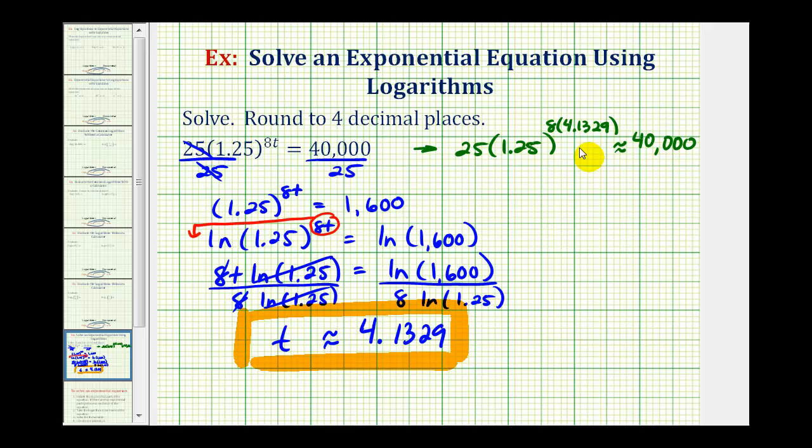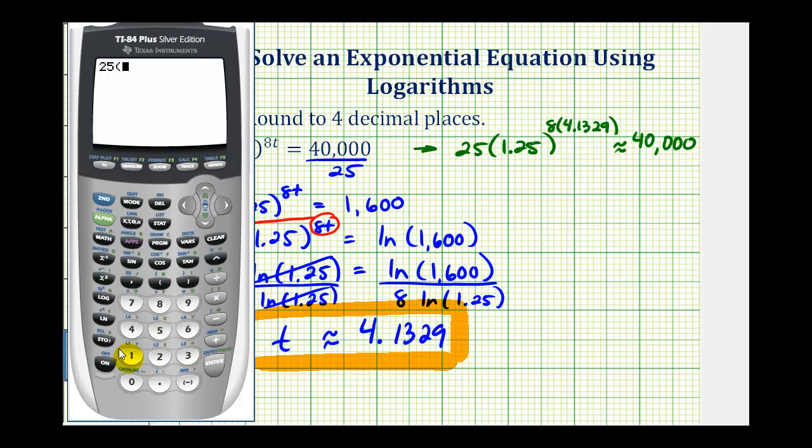Let's go back to the calculator and check this. 25 times 1.25 raised to the power of 8 times 4.1329. Notice how it is approximately equal to 40,000. This is a little bit larger because we did round the exponent up. But this does verify that our work is correct.